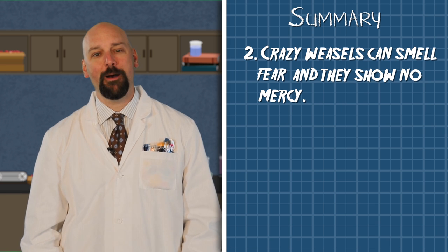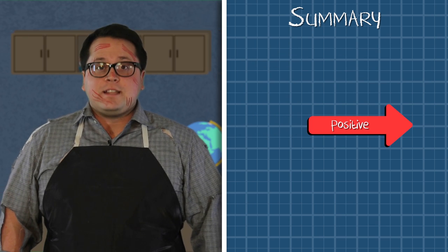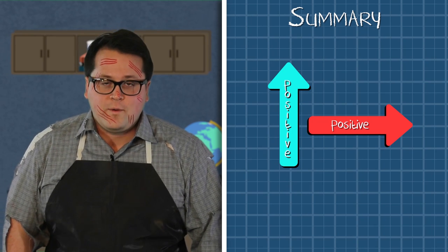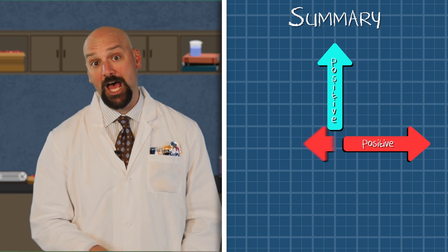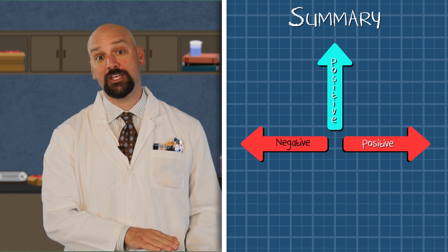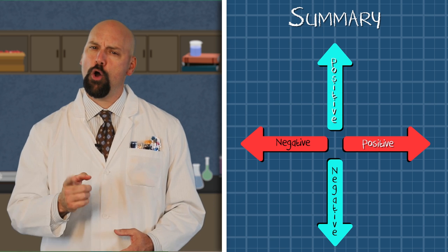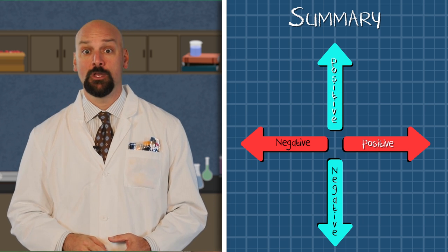I learned that crazy weasels can smell fear and that they show no mercy. That's not all. What do we learn about positive and negative coordinates? The positive numbers slide to the right on the x-axis and jump forward on the y-axis. Yep, and negative numbers, we slide to the left on the x-axis and we jump backward on the y-axis.